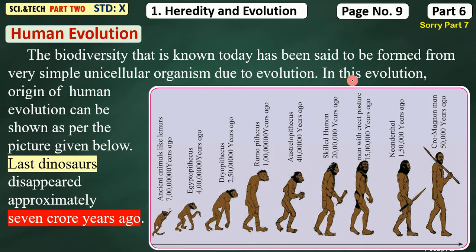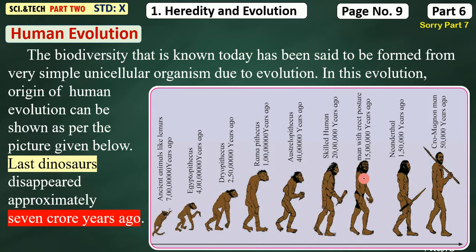In this evolution, the origin of the human — if you talk about the origin of human evolution — it can be shown as per the picture given below. This is how you see human evolution and human development.